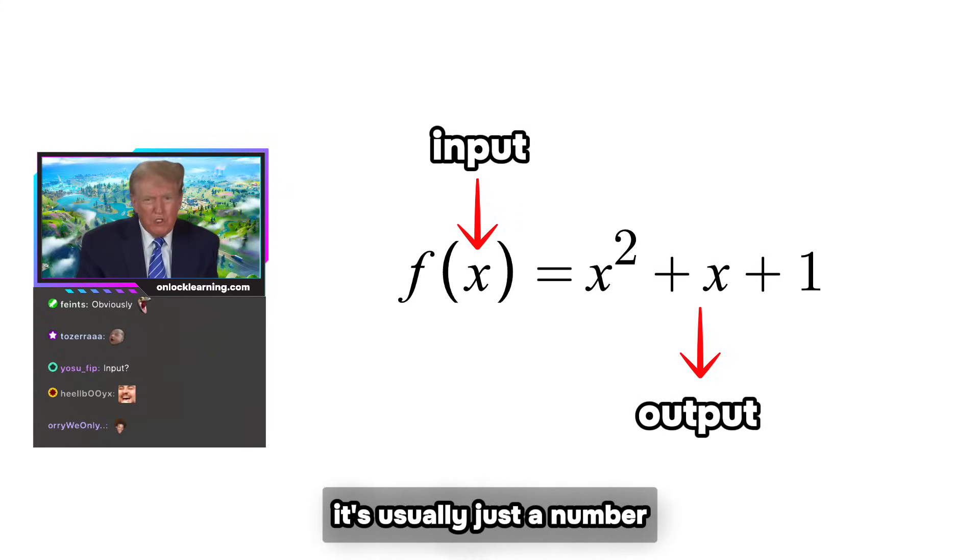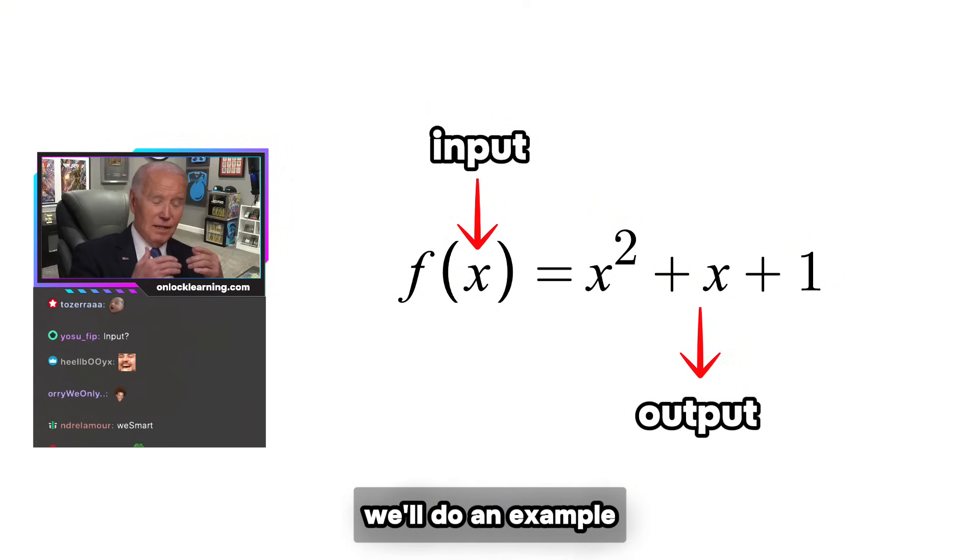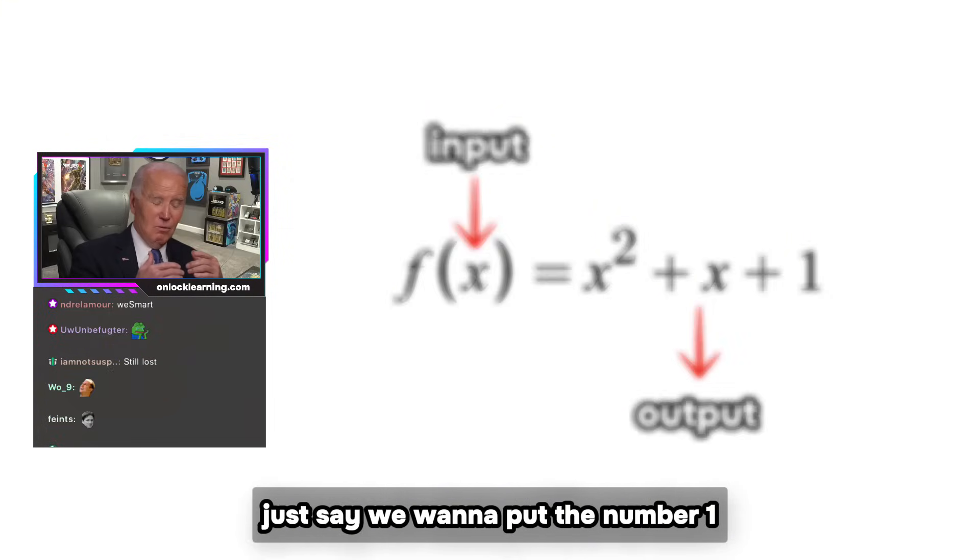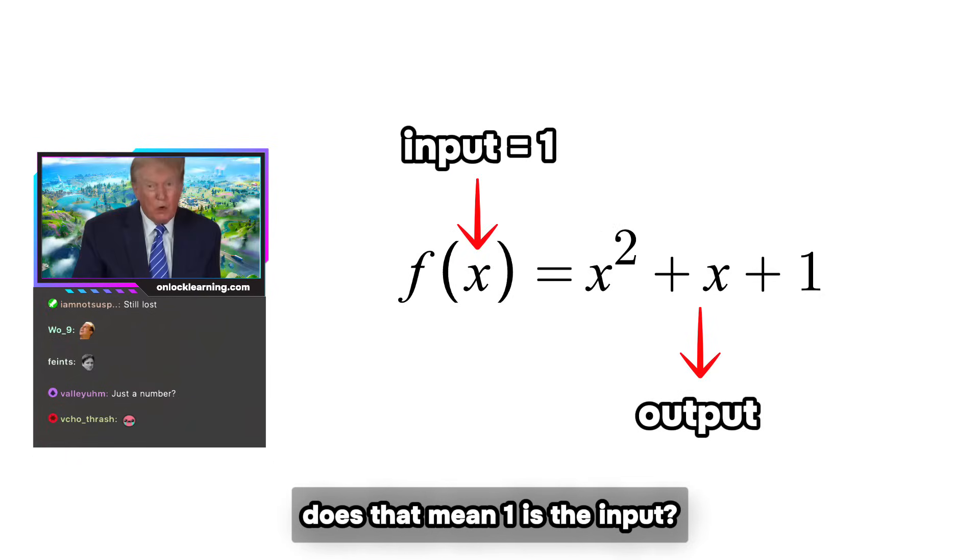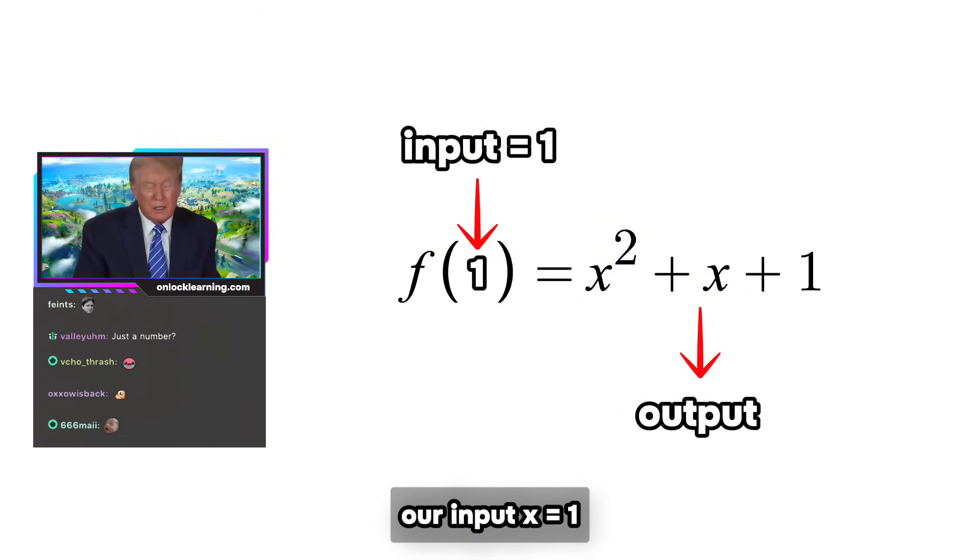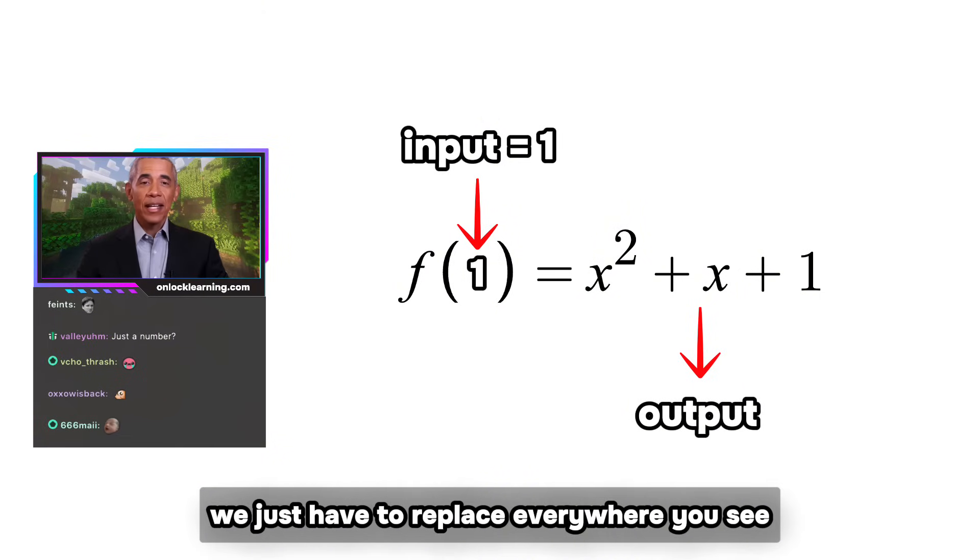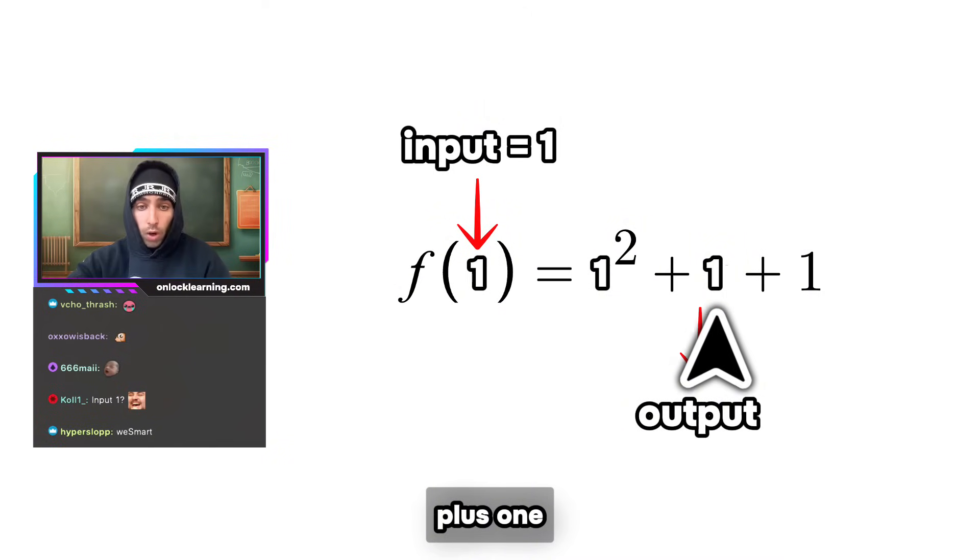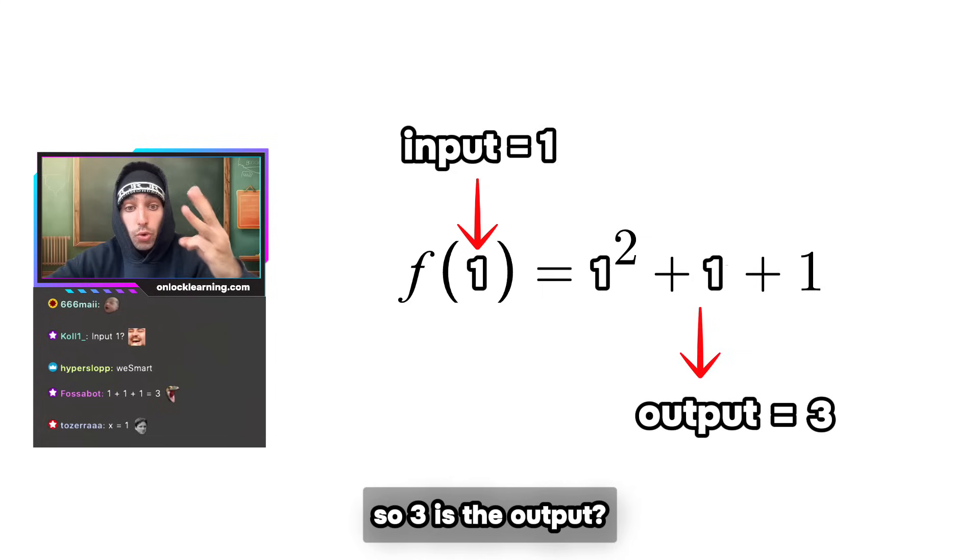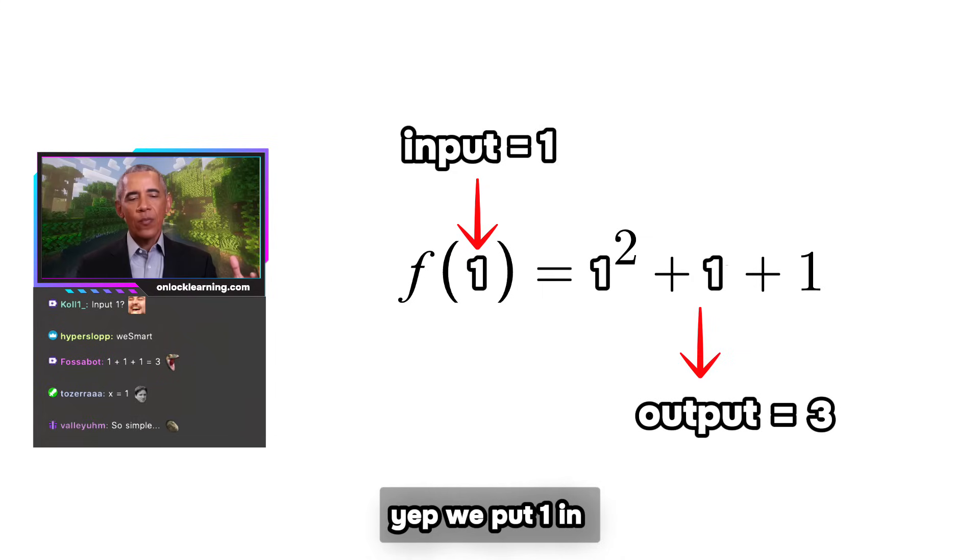I've lost you. Hey, it's usually just a number. We'll do an example. Just say we want to put the number one into this function—does that mean one is the input? Correct, our input x is one, and to get the output we just have to replace everywhere you see x with the number one. So one squared plus one plus one—so uh, three. Not bad kiddo. So three is the output. Yep, we put one in and the function put out three.